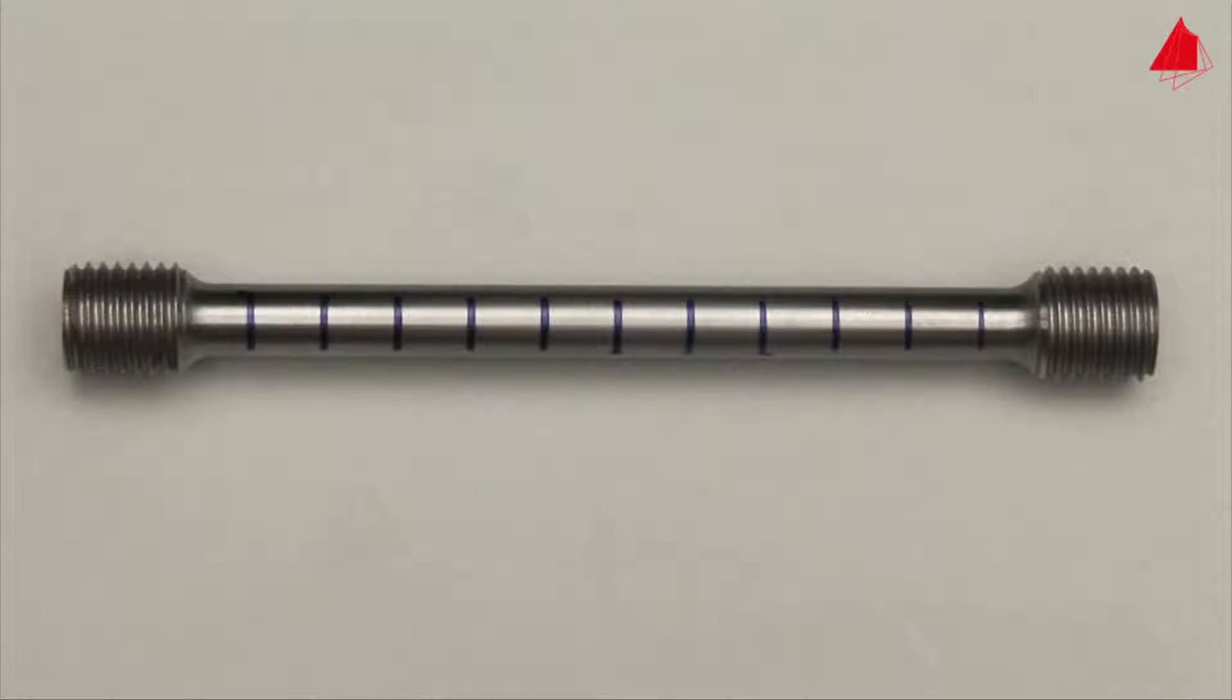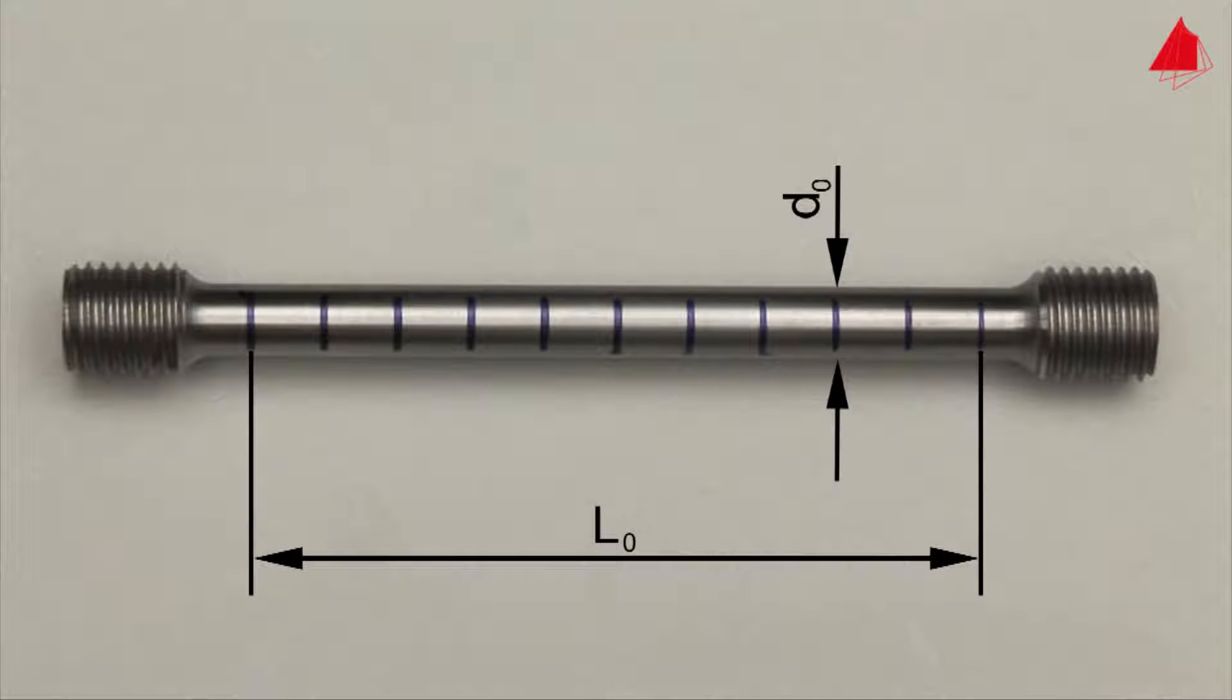This is the test piece. It has a cylindrical test region with an original diameter of 10 mm and an original gauge length of 100 mm. Within this test region, distance marks have been drawn at regular intervals. They help to visualize and measure the plastic behavior of the specimen.